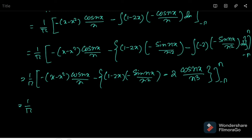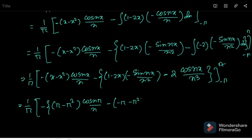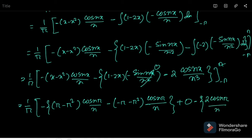Putting in the limits carefully: the term involves minus π² cos(nπ)/n and minus (minus π²) cos(minus nπ)/n. Since cos(minus x) = cos(x), cos(minus nπ) = cos(nπ). The cos(nπ)/n³ terms cancel to zero.